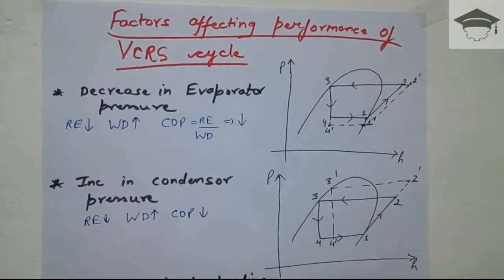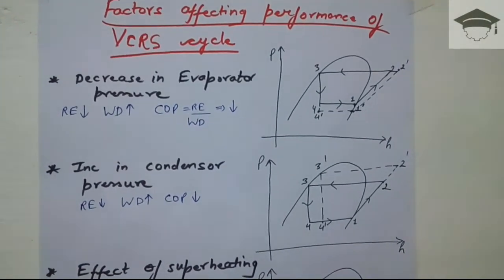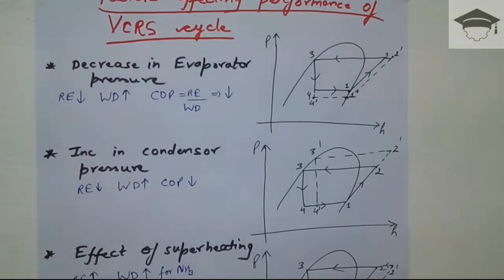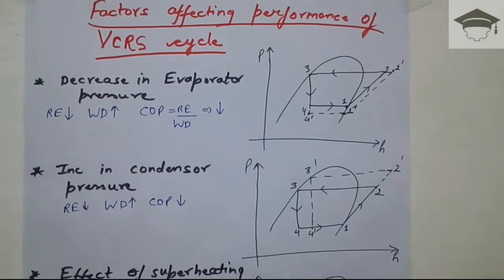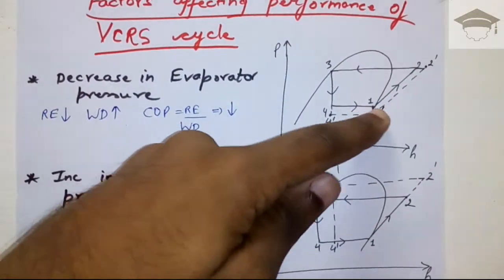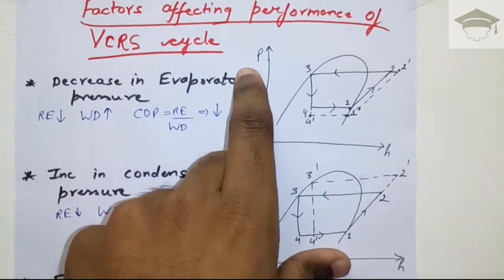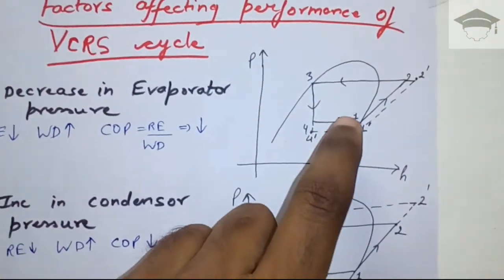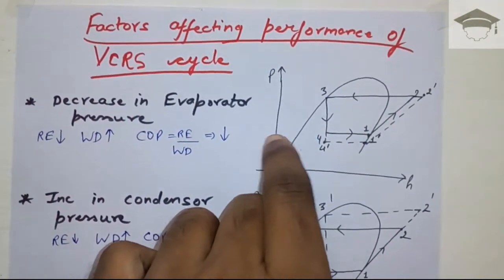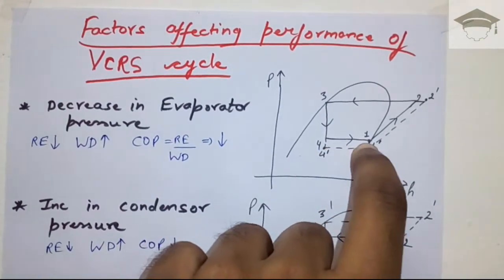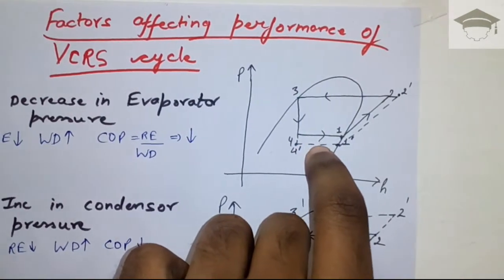The VCRS cycle — that is, the vapor compression refrigeration system cycle — mainly depends on four parameters: evaporator pressure, condenser pressure, superheating, and sub cooling. First, let us take evaporator pressure. This is drawn on a p-H, that is, pressure-enthalpy diagram, which makes it easy to understand.